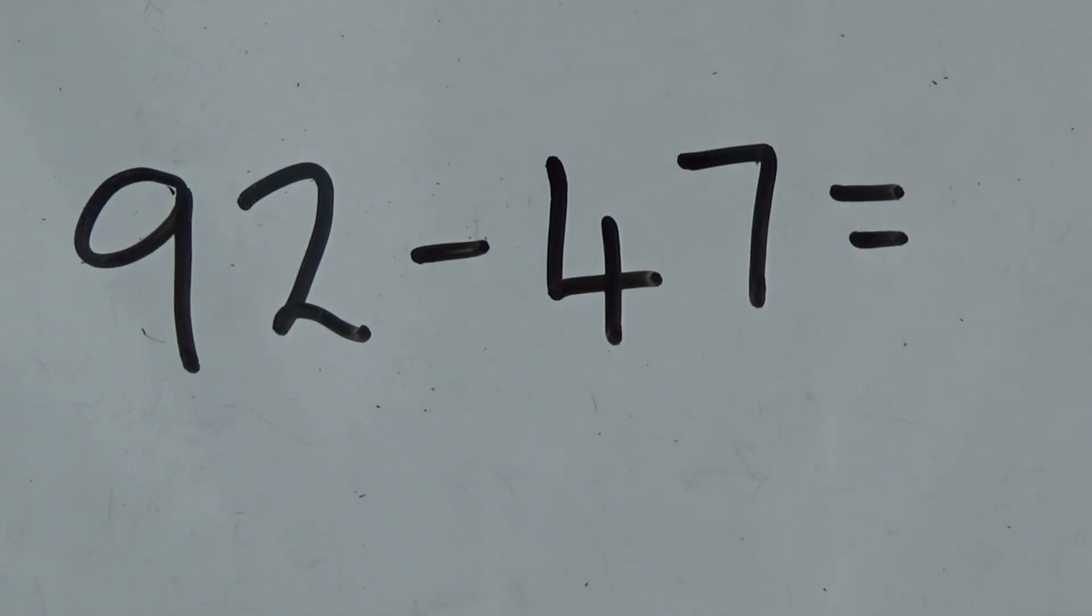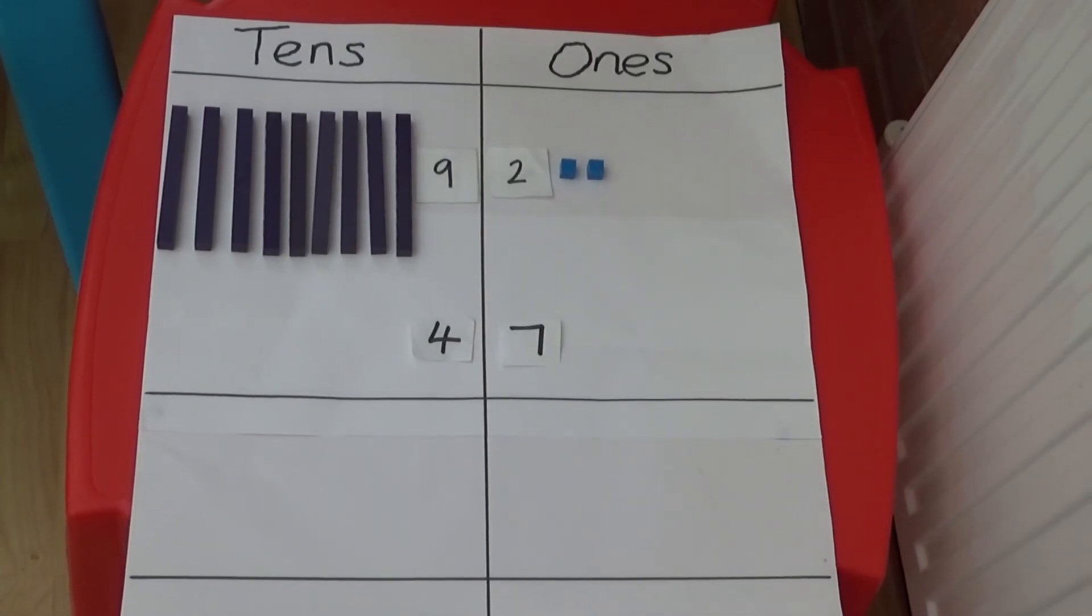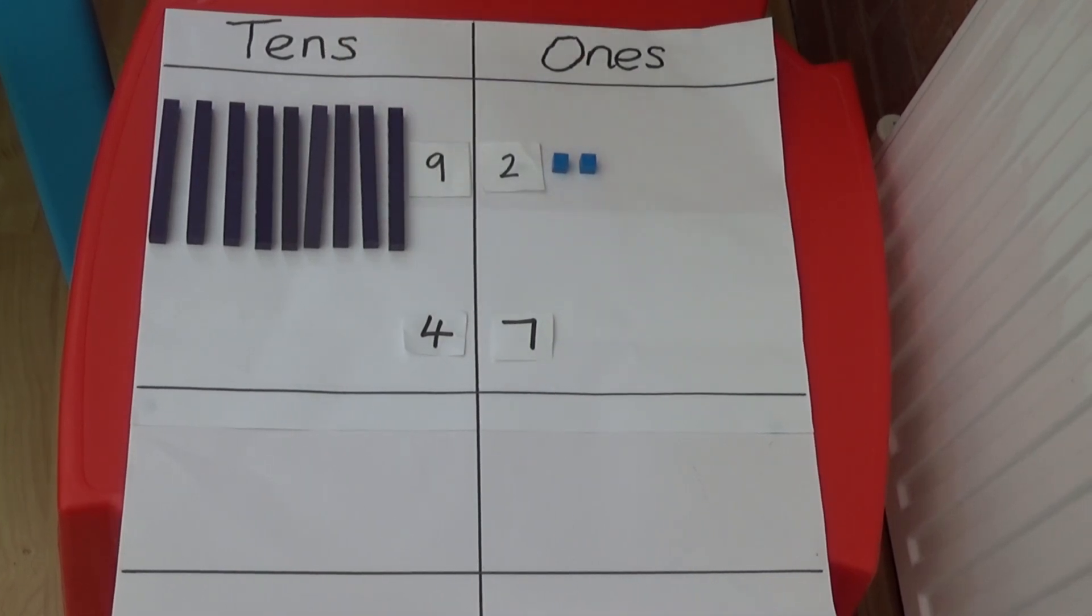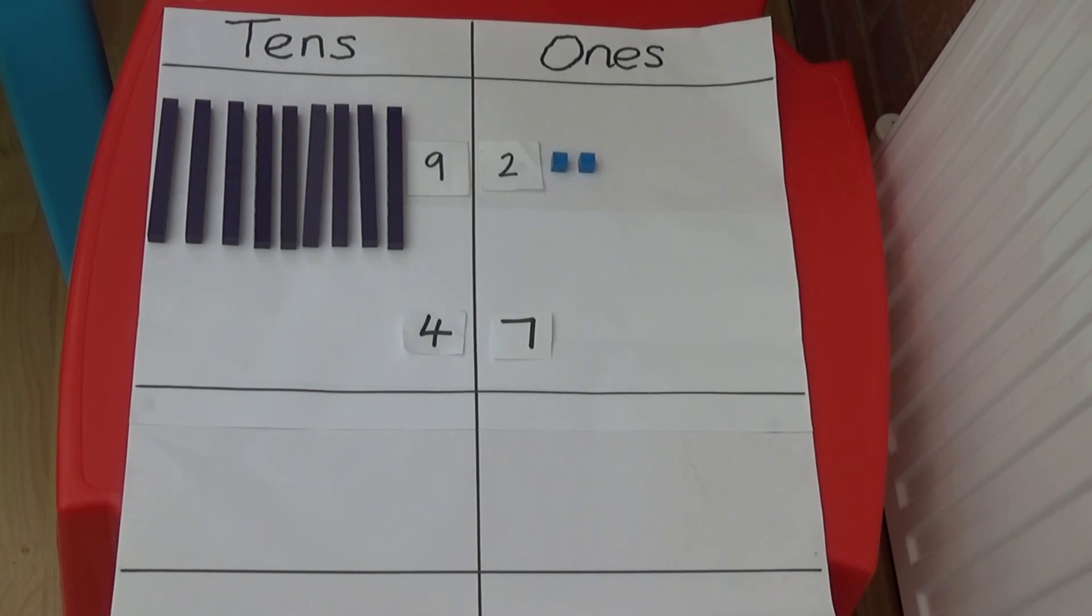This time I'm going to show you what happens when there are more ones in the second number than the first number. I'm going to use column method to work out 92 minus 47. I've made the number 92 using 9 tens rods and 2 ones cubes. And underneath I have put the number that I am subtracting which is 4 tens and 7 ones.